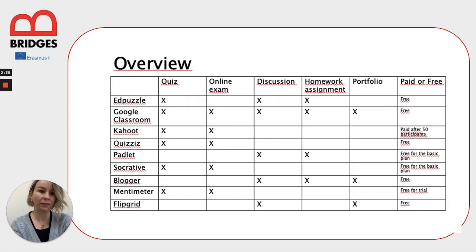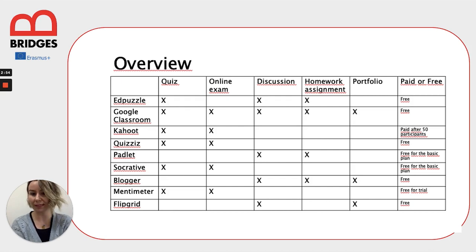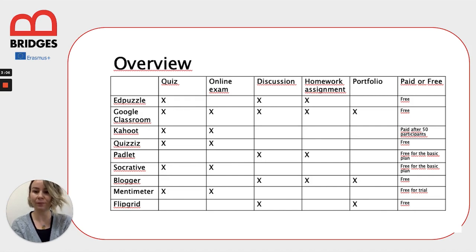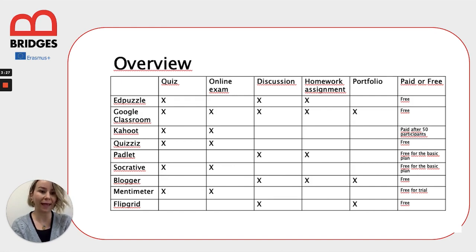Among them, AdPuzzle is completely free and can be used for quizzes, discussion board activities, and assigning homework for your students. Google Classroom is another free outlet that you can use for quizzes, online exams, discussion boards, homework, and portfolio assessment. Another free outlet is Flipgrid, which you can use for portfolio and discussion board activities. Among these outlets, some tools can be used partially free, but in order to use them in their full function, you need to subscribe. For example, Kahoot is free for the first 50 participants, but if you have more than 50 students, you need to pay and subscribe for the pro plan. For Socrative, it's free for the basic plan, but you need to pay and subscribe for the more complicated plans.